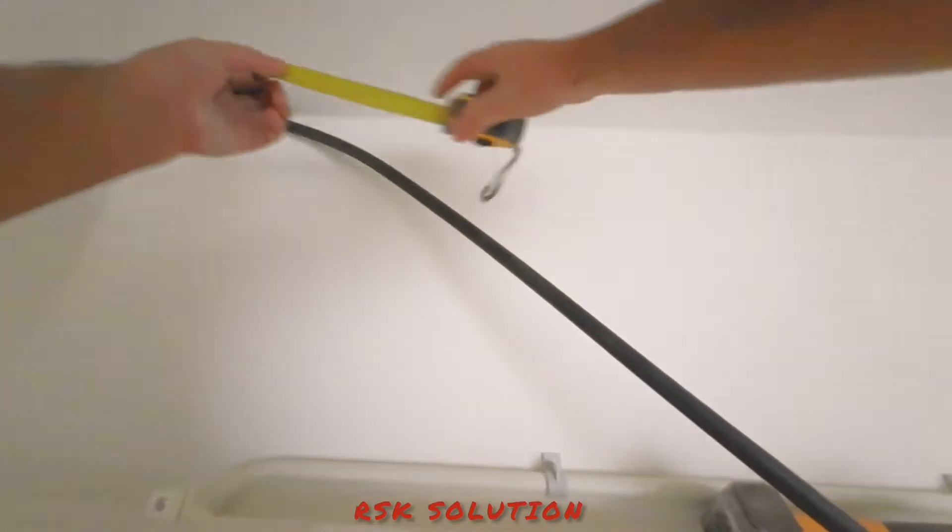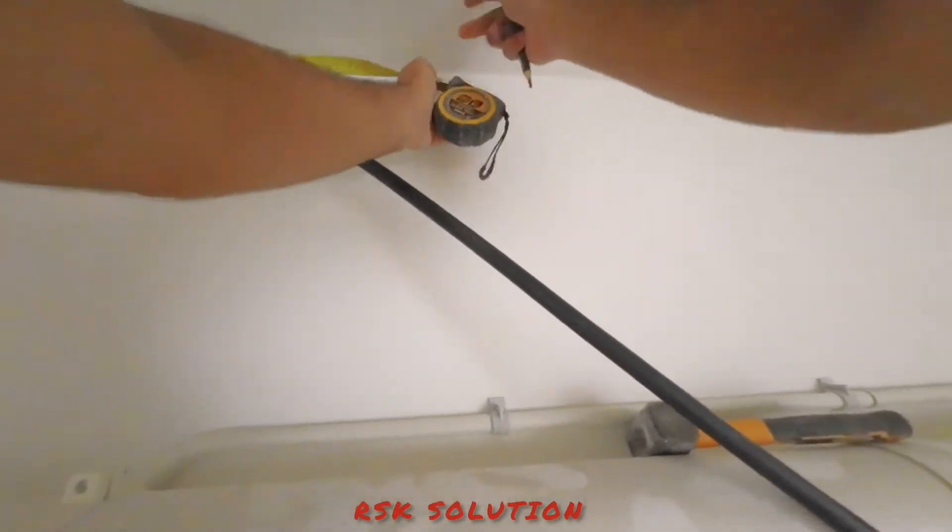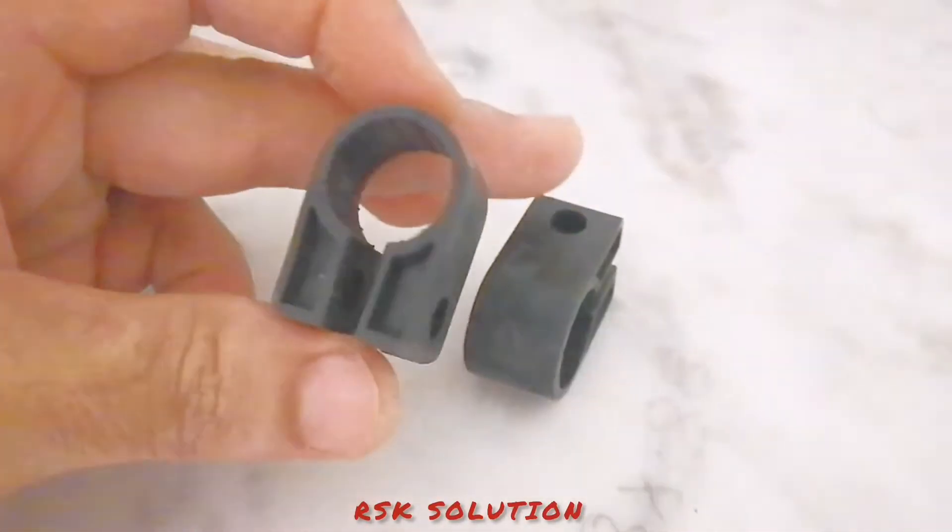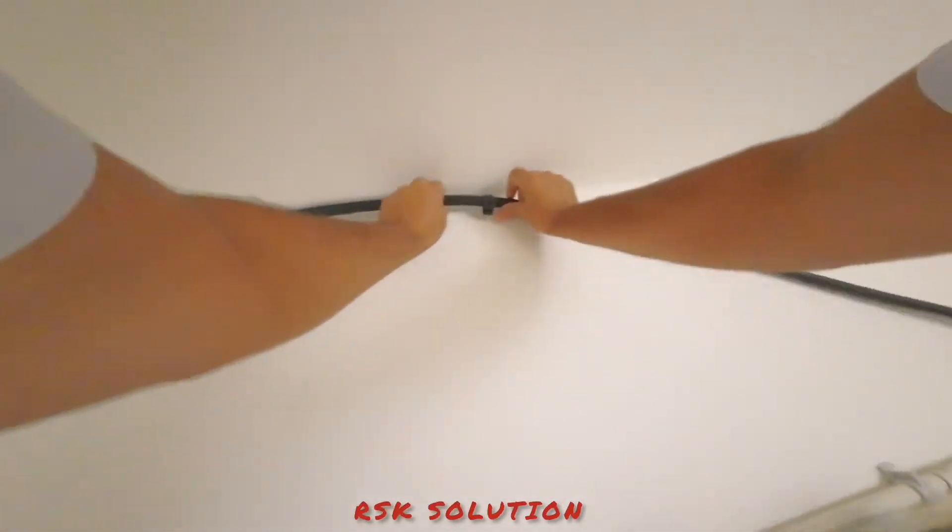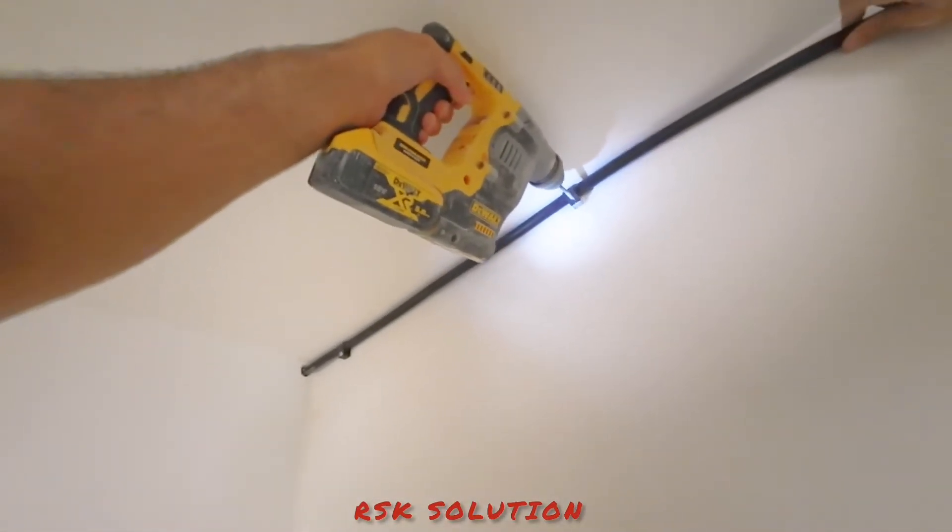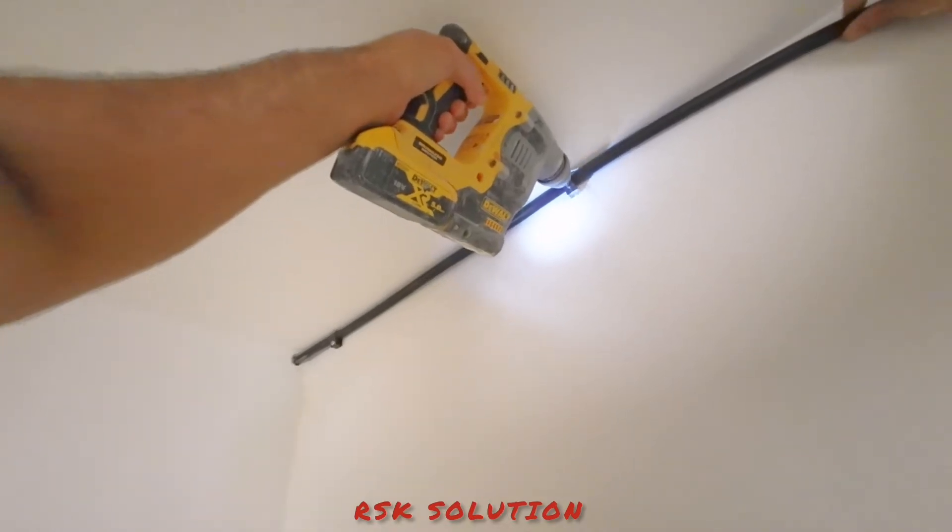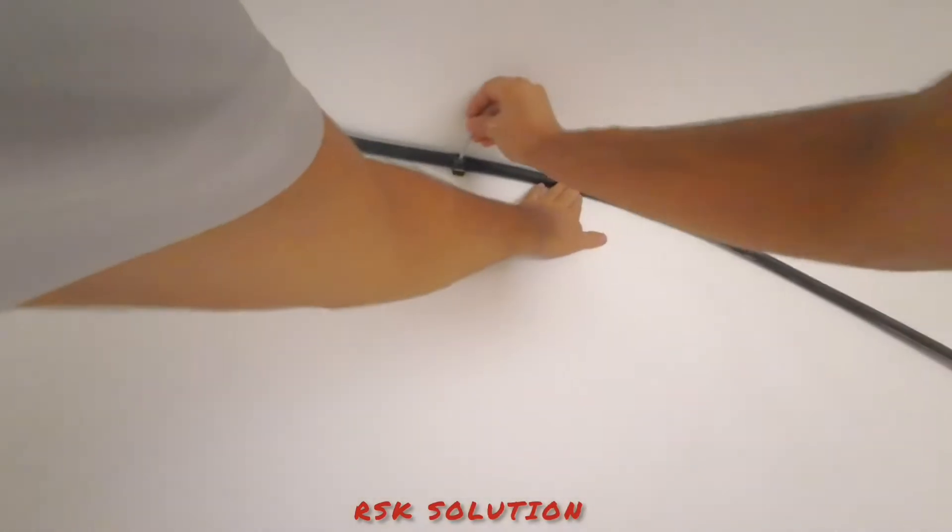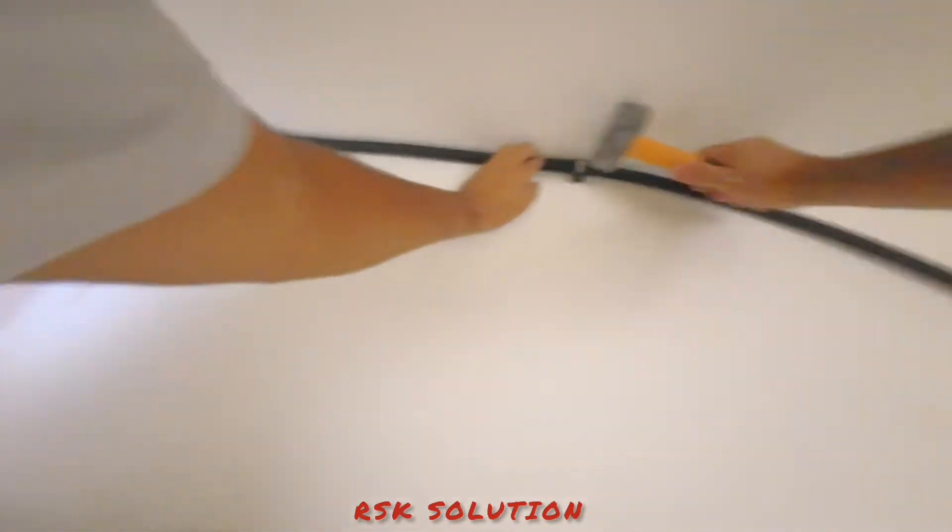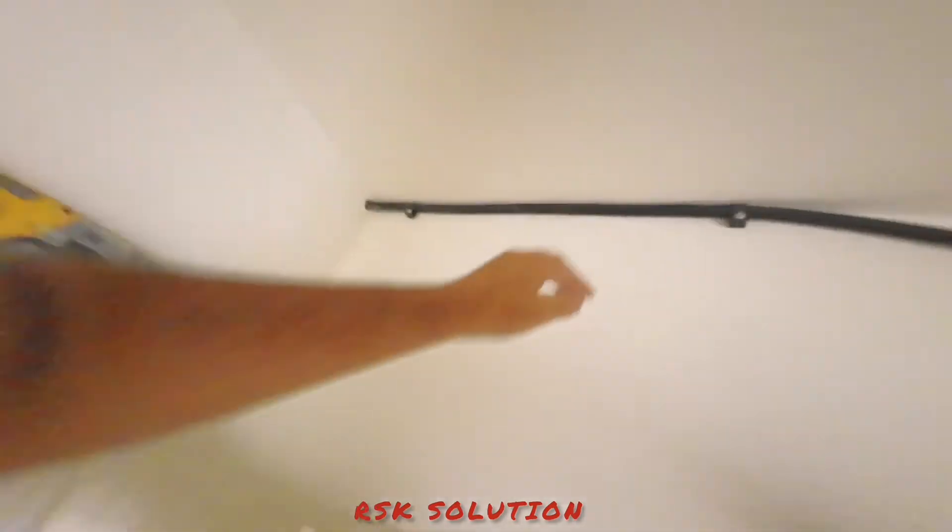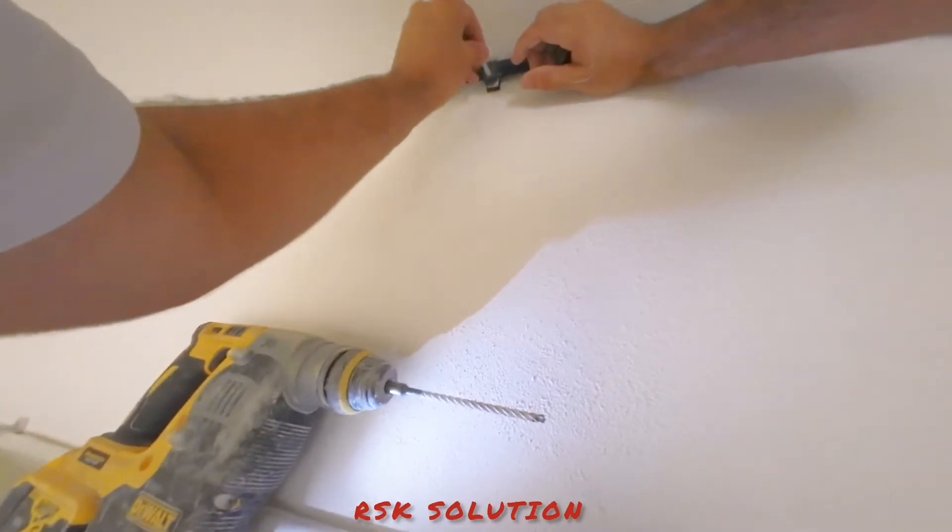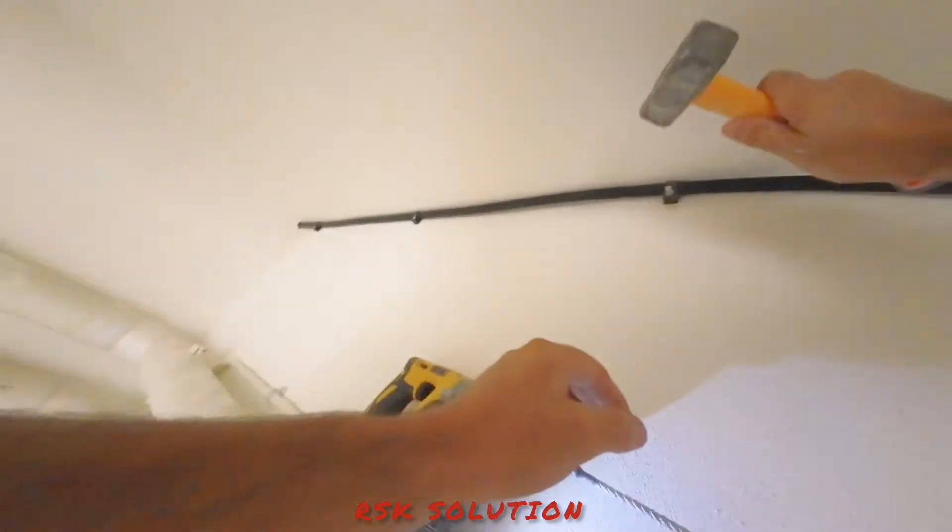Now we're going to make it 60 centimeter distance and we use a clutch. We make a hole for 6 millimeter. We use a screw 6 millimeter and hammer it, and we're going to do the same process: 6 millimeter and hammer it.